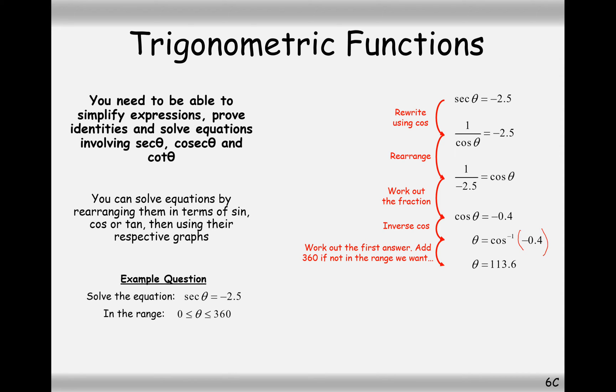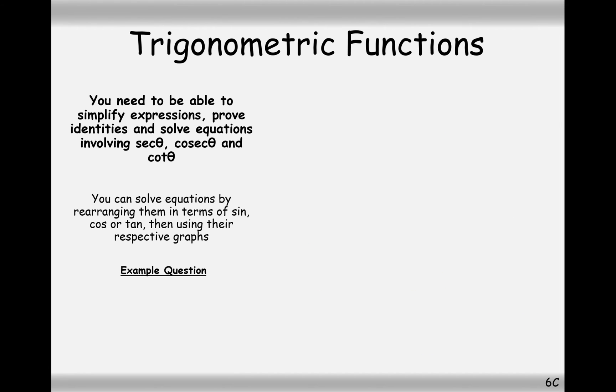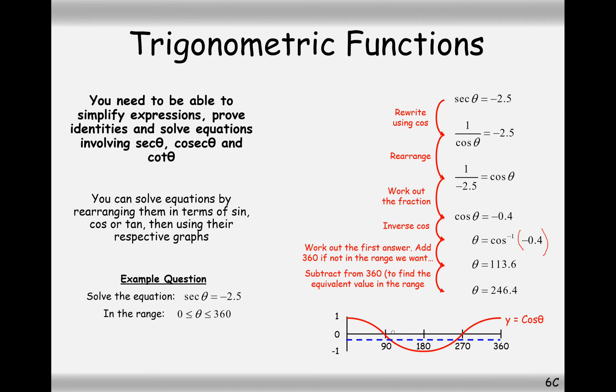So, inverse cos the minus 0.4. In this case here, we're going to get 113.6. And then using the cos graph to work out the second solution, 113.6 is going to be here. So, we need the other solution that's here. It's going to be 360 minus 113.6, which is 246.4.